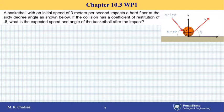If the incoming angle is 60 degrees and coefficient of restitution is 0.8, what is the expected velocity, both magnitude and the direction of the basketball after impact? That's what we're interested in.